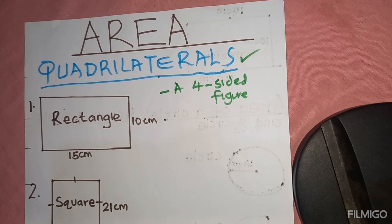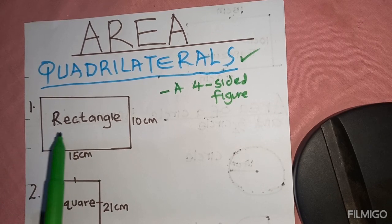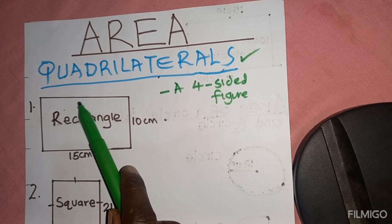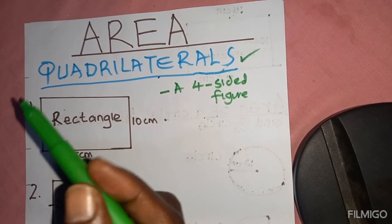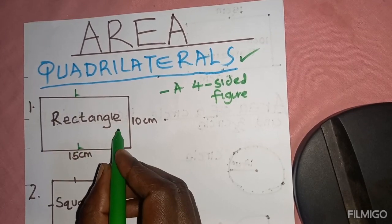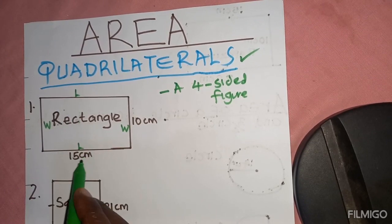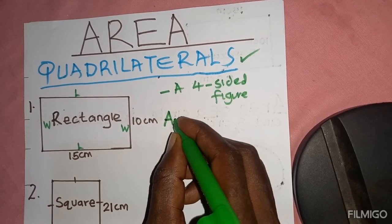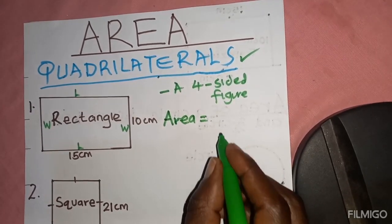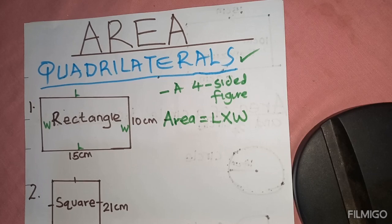The first one we are going to deal with is the area of a rectangle. A rectangle is a quadrilateral with four sides. Two opposite sides are equal, so it has two pairs of parallel sides — two lengths and two widths. Area of a rectangle is given by length times width.